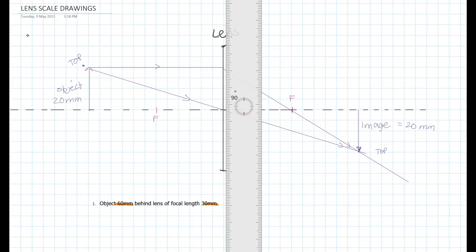That shows that the location is now 60 millimeters from the lens and the magnification is 20 over 20 or 1. Hope that helps.